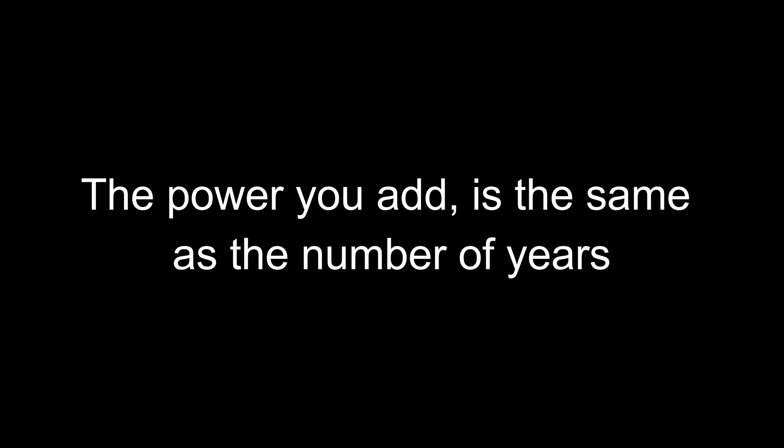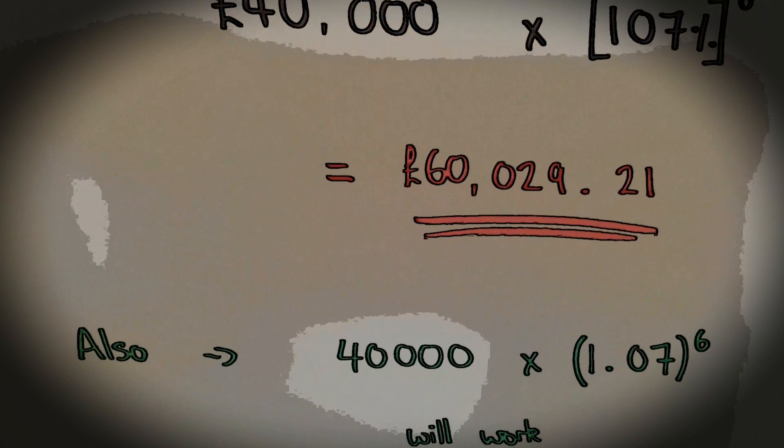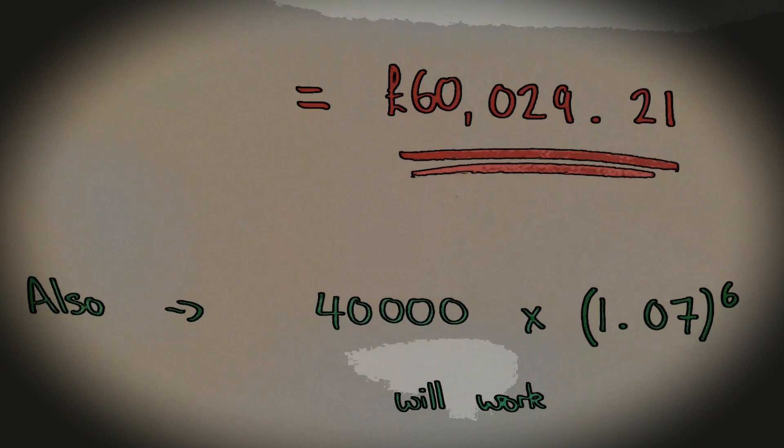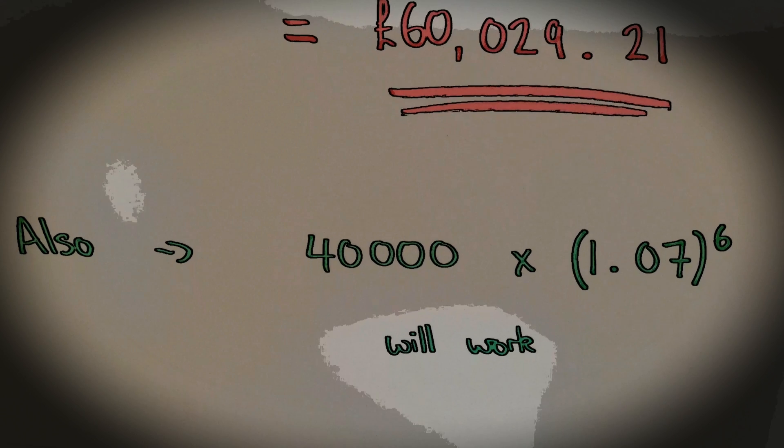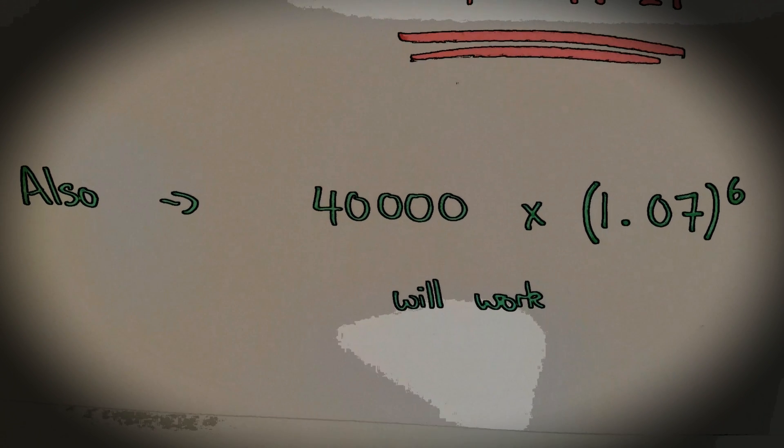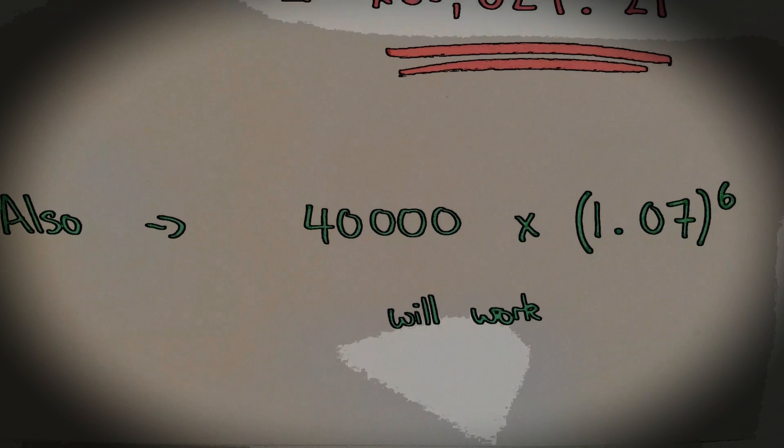The power you add is the same as the number of years. If you watch my other video on increasing by percentages, you'll know that you can also do it this way: forty thousand pounds times 1.07 to the power of six. It means exactly the same thing, it's just written differently.